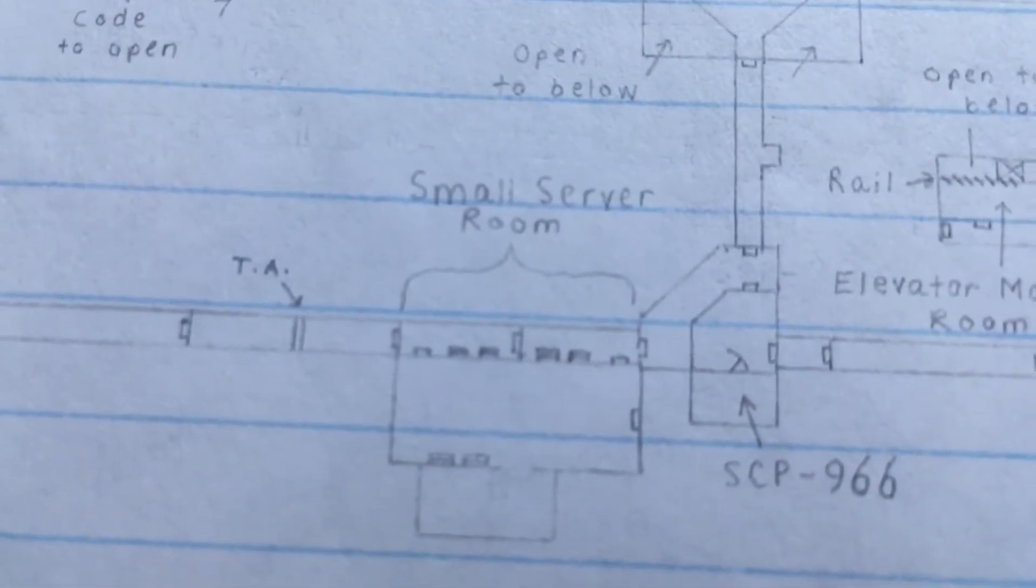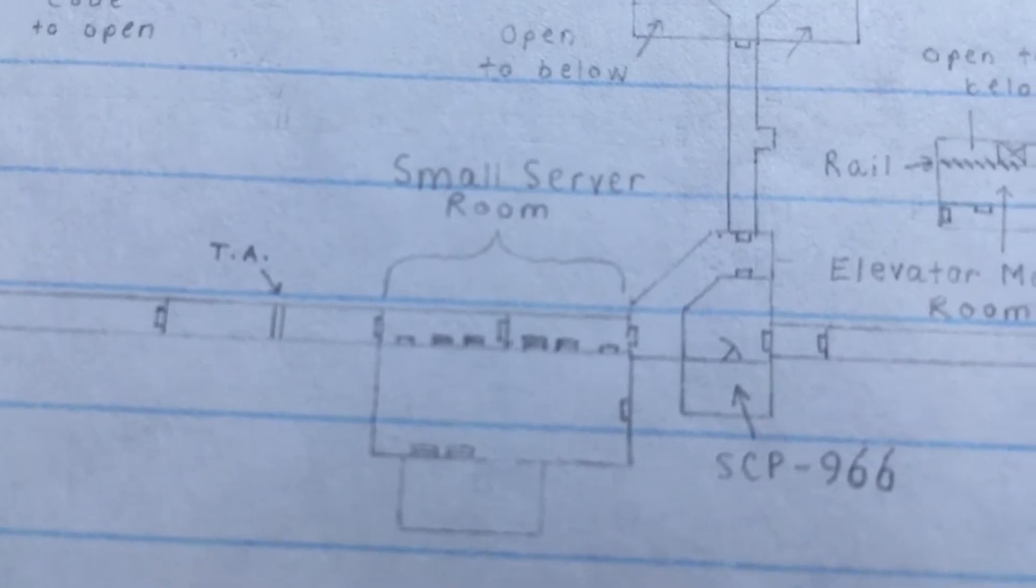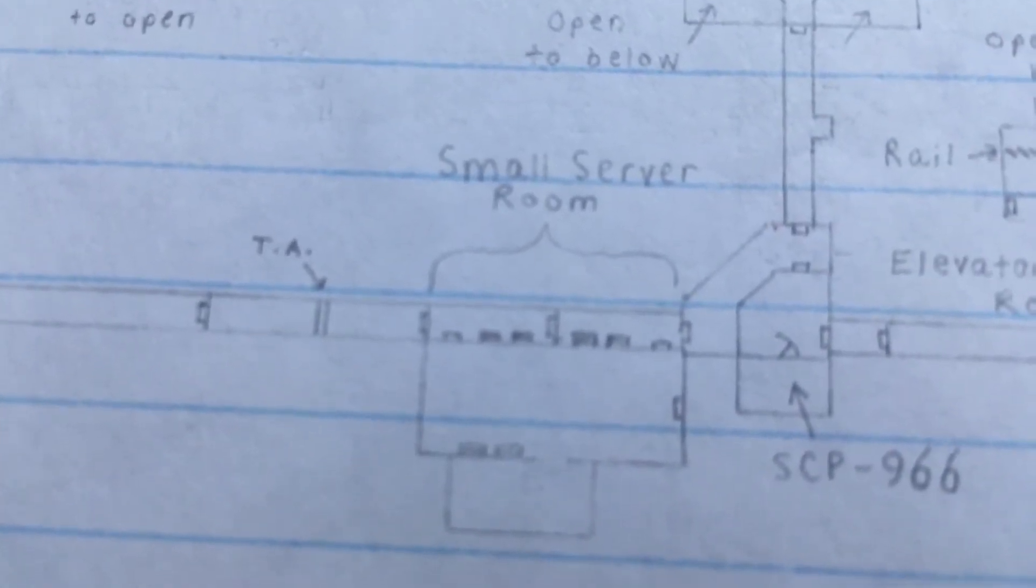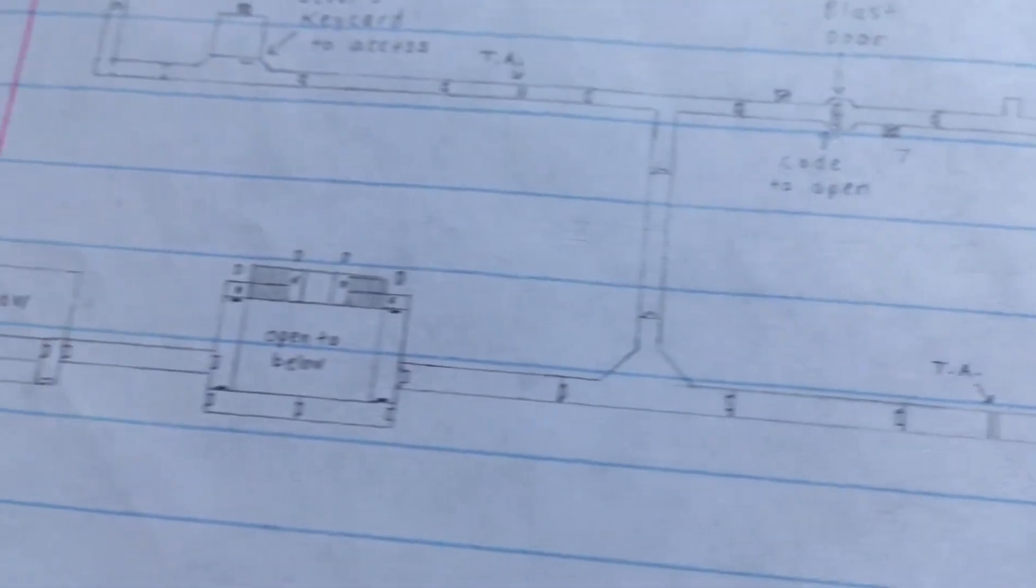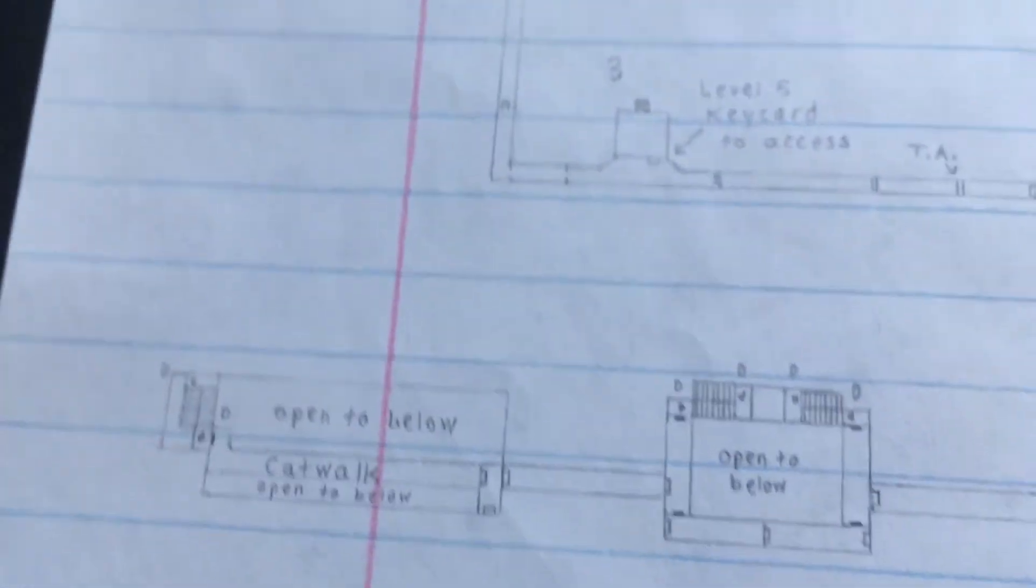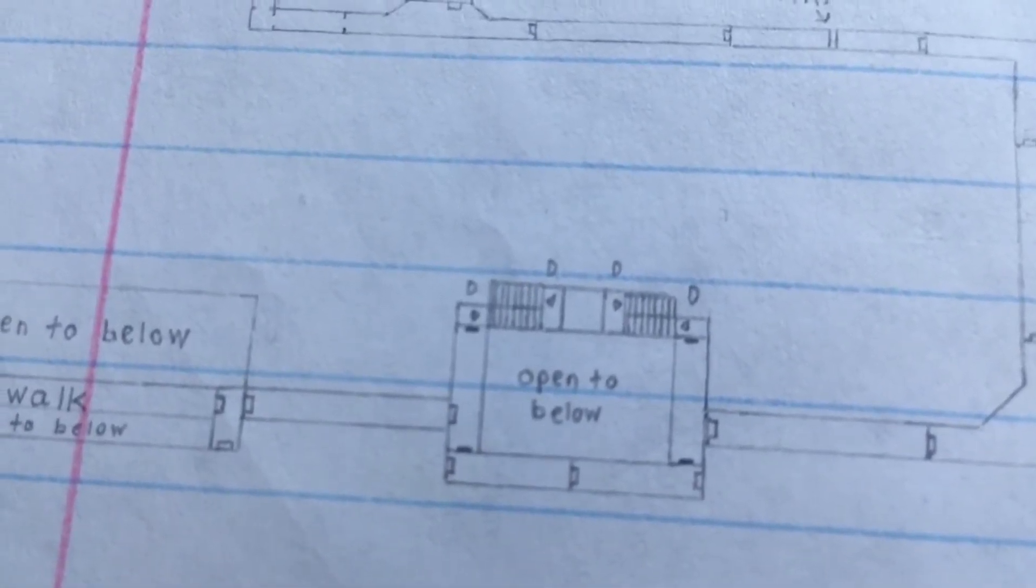Here's 966, a pretty freaky SCP because you can't see it unless you're wearing night vision goggles. Yeah, the small server room where 096 hangs out because he doesn't have an actual chamber, although in later versions he actually does get one.